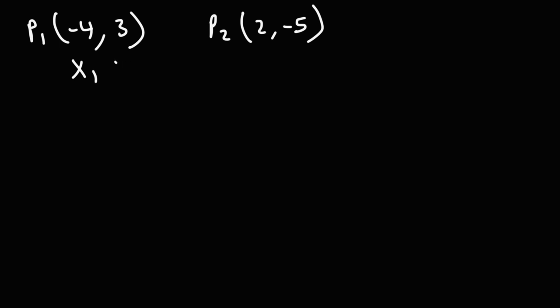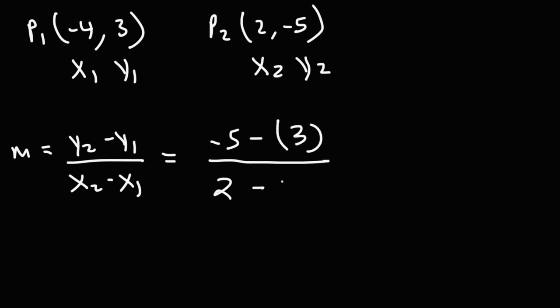So let's call this x1, y1, and this is going to be x2, y2. First, let's write the formula. And then we'll plug in. So y2 is negative 5 minus y1, which is positive 3. x2 is 2 minus x1, which is negative 4. Negative 5 minus 3 is negative 8. 2 minus negative 4, whenever you see two negative signs next to each other, they cancel and become positive. 2 plus 4 is 6.